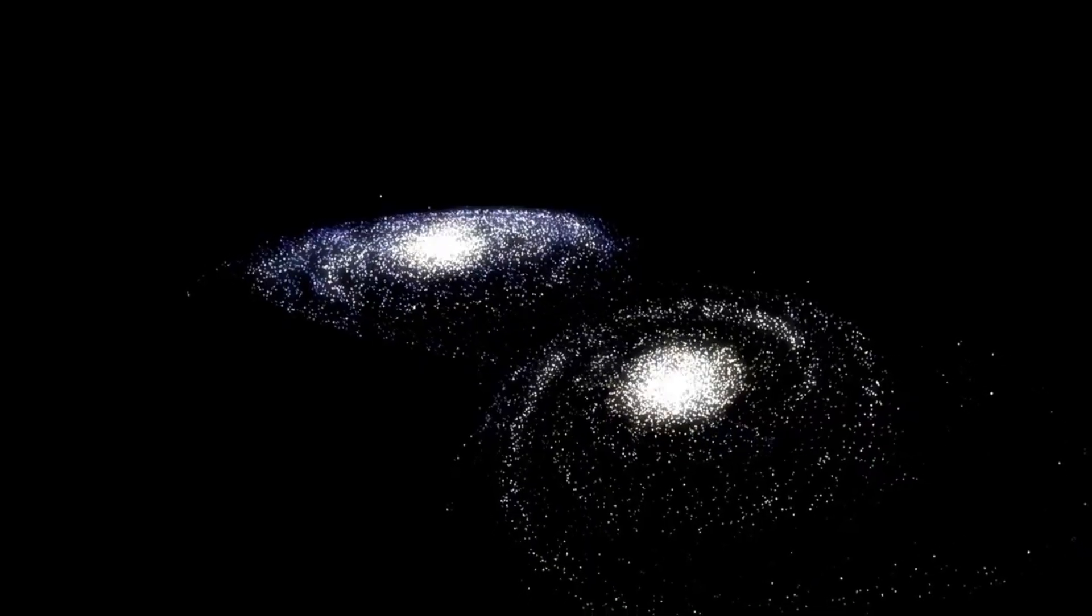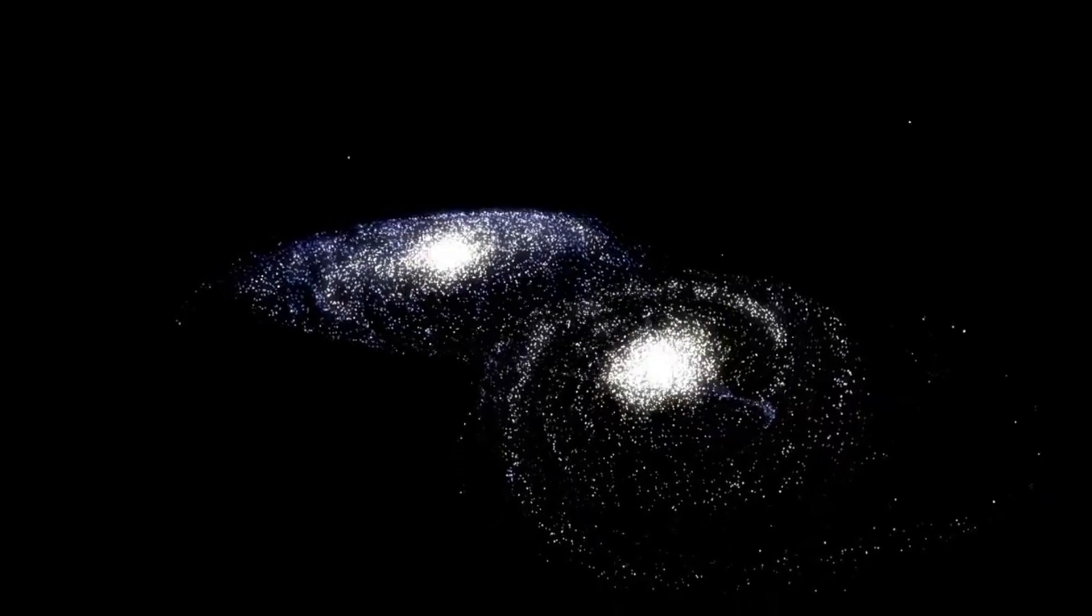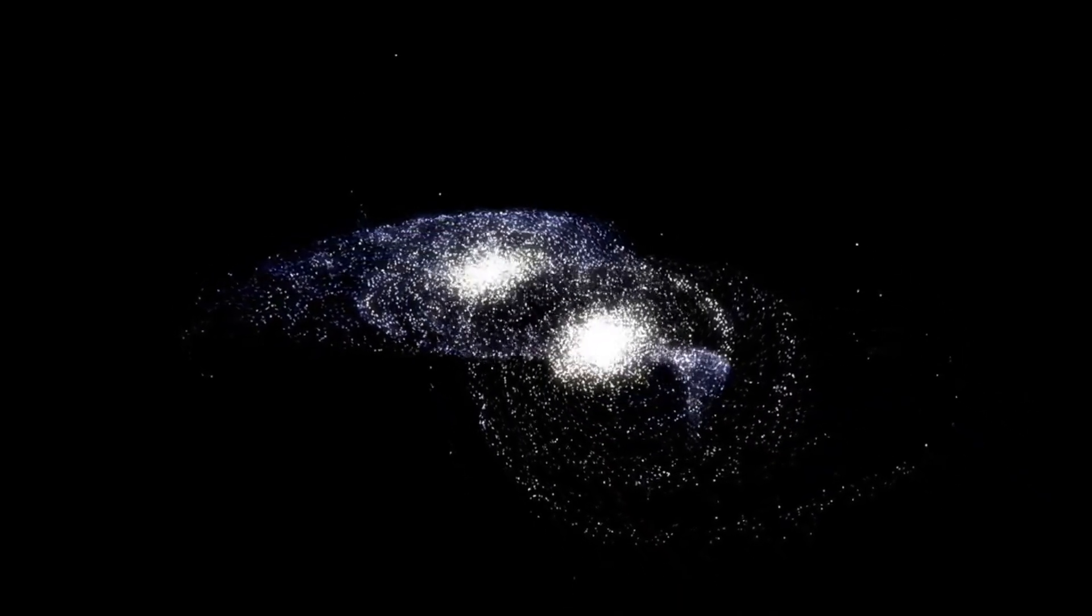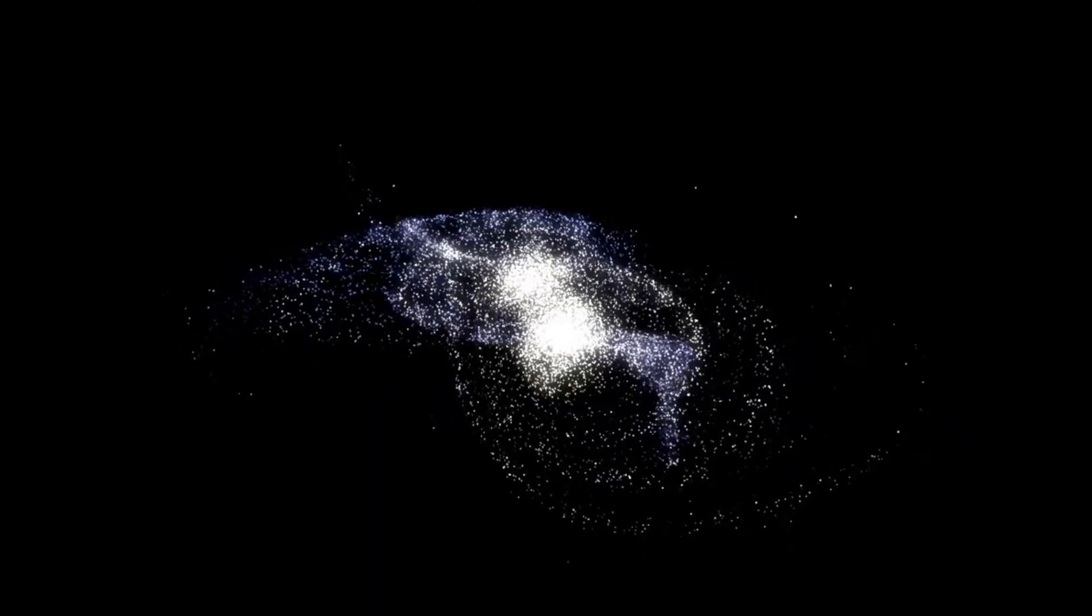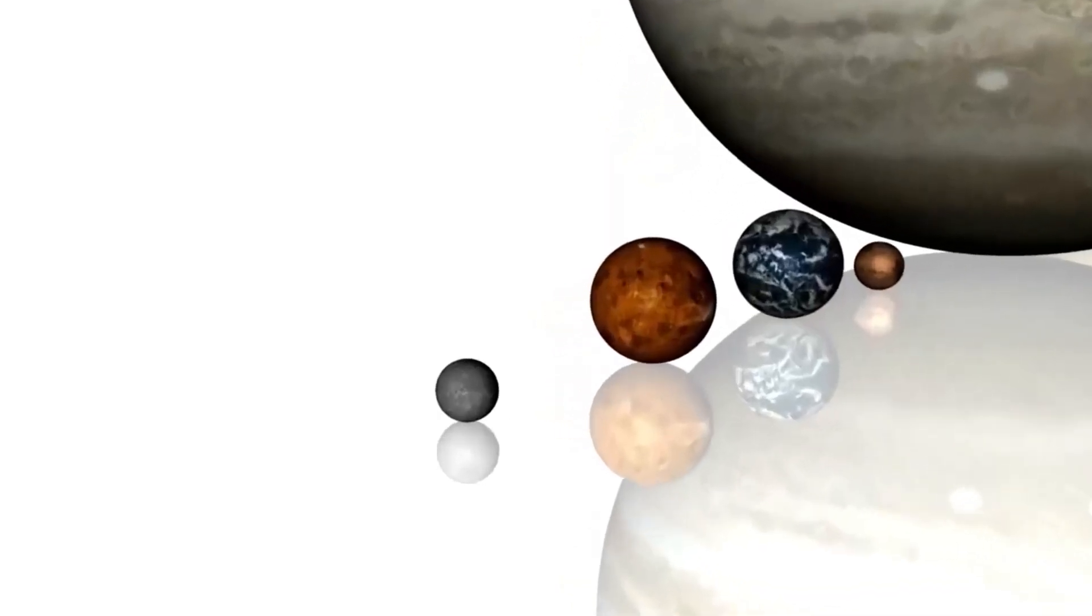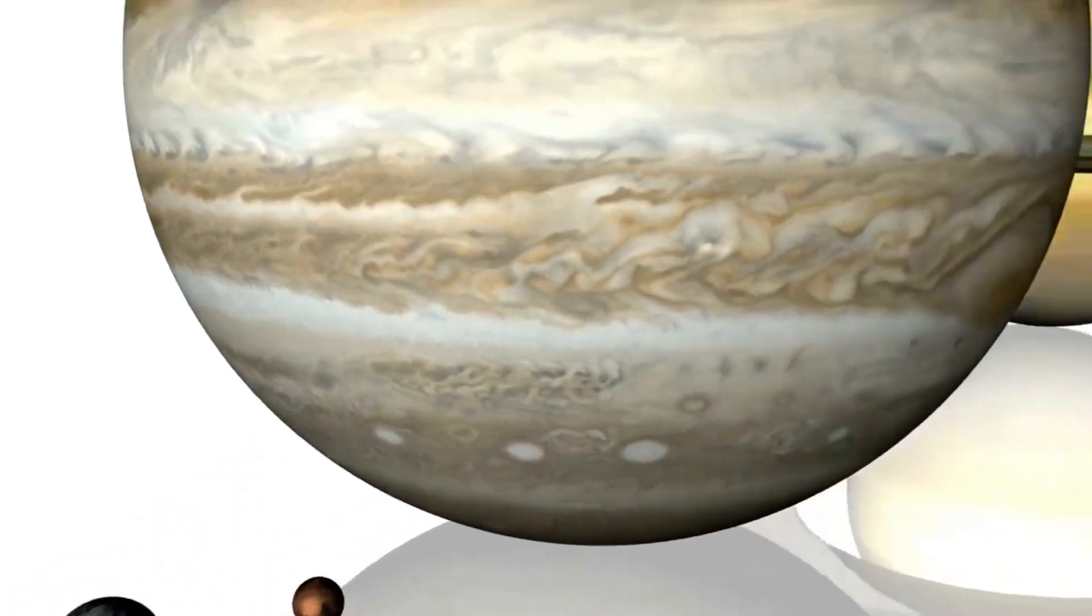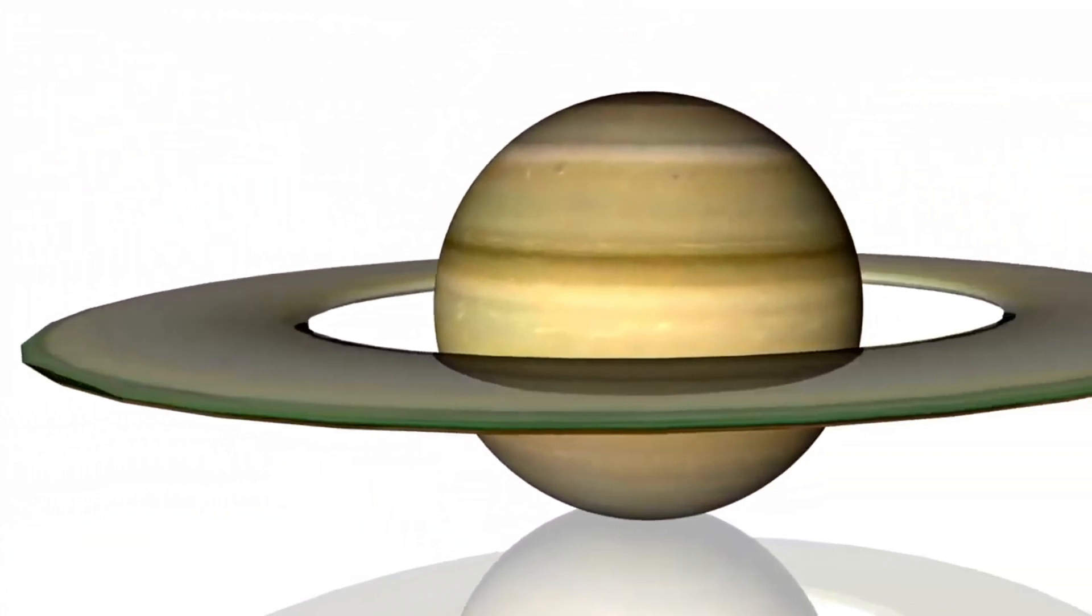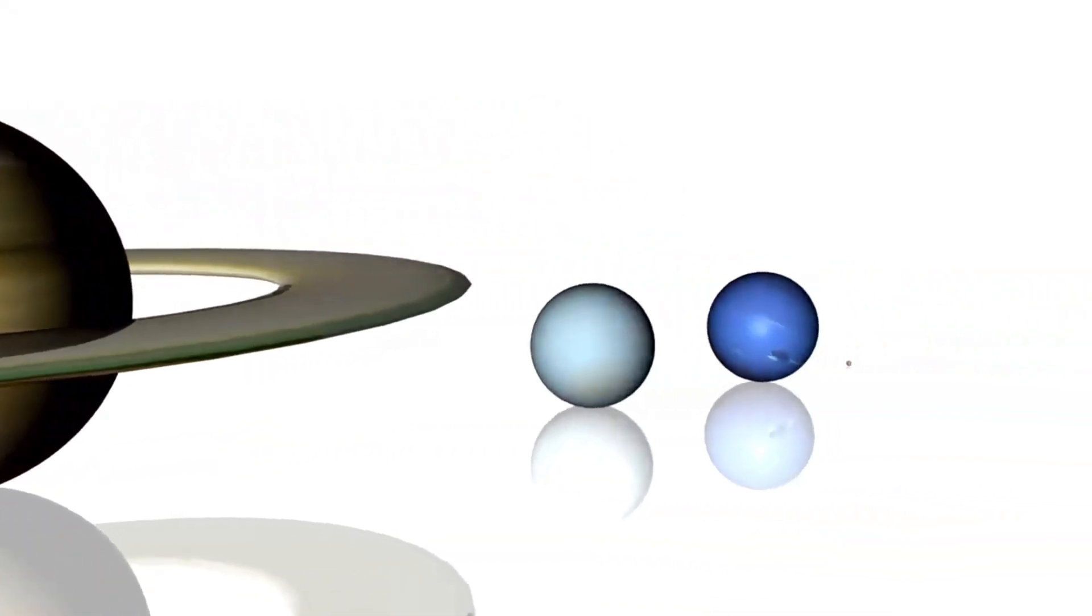Yet, our galaxy is only one among an estimated 1 trillion other galaxies in the observable universe. A trillion is a number so large that it defies simple understanding. To help visualize it, consider this: if you gathered a thousand groups of a thousand cats, you would have a million cats. Now, if you multiplied that by a million, you would have a trillion. That's the number of galaxies estimated to exist in the cosmos.